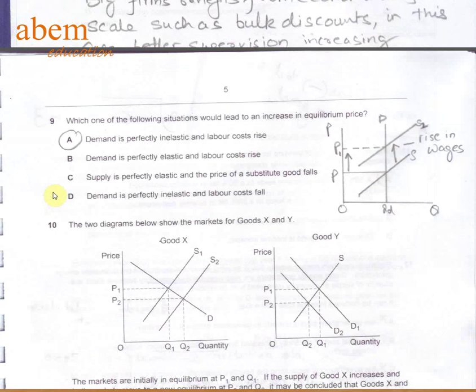In question number nine, the demand curve is highly inelastic. The inward movements of the supply curve due to rise in wages, which is cost-push inflation. So we can see the price goes up. The answer is A.